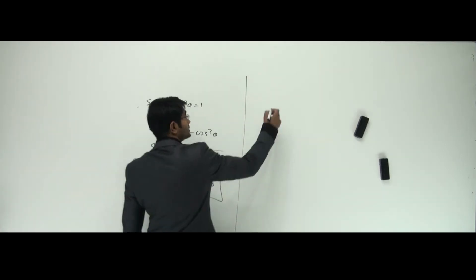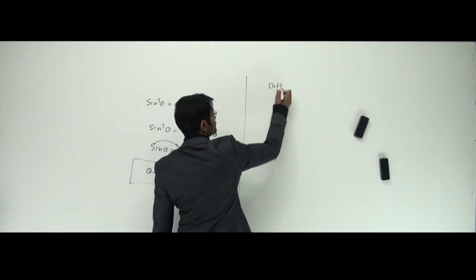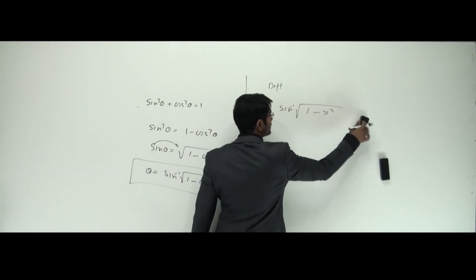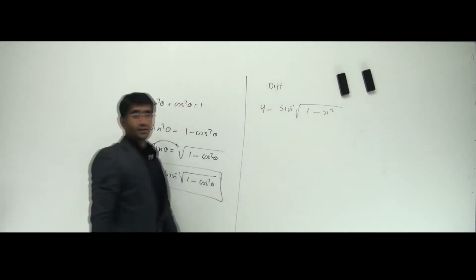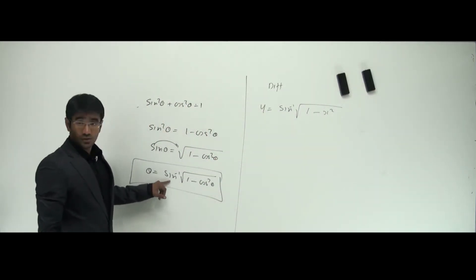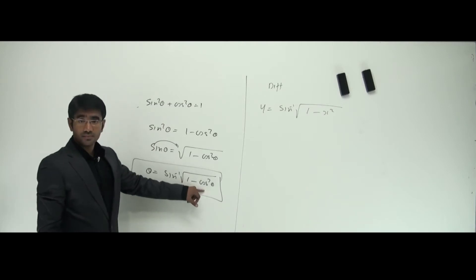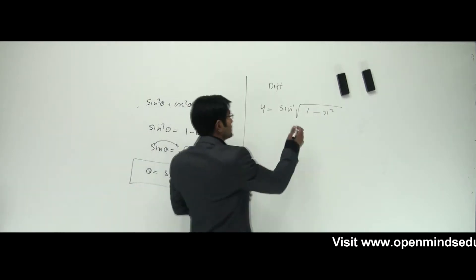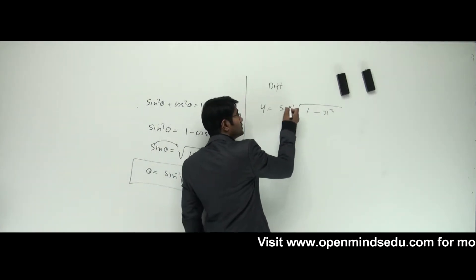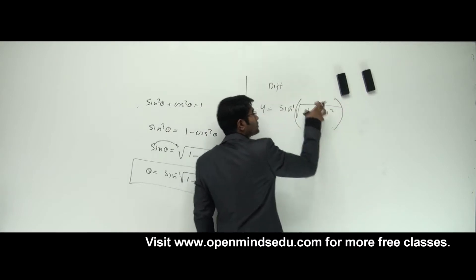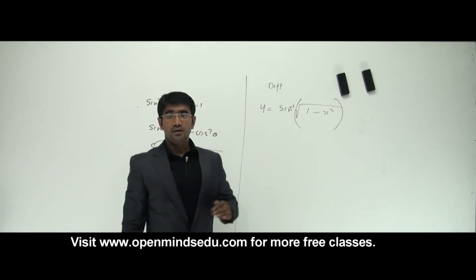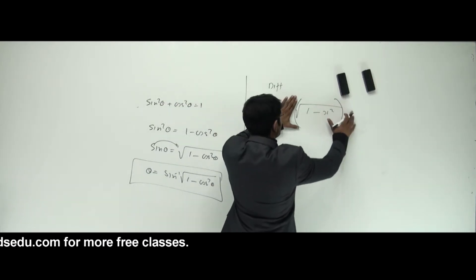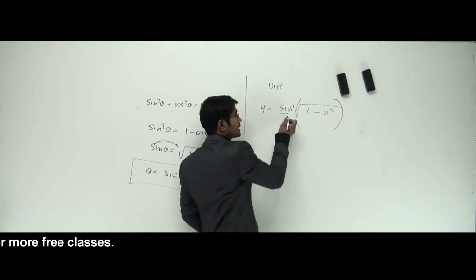If they ask you a question which says differentiate y equals sine inverse of root of one minus x squared — look at this. I have a sine inverse function and a root and one minus cos squared theta inside. This came from that formula. Now, if this is my question where I have sine inverse, what is in my mind while substituting? Anything inside this bracket should become sine so that I can cancel the sine inverse.